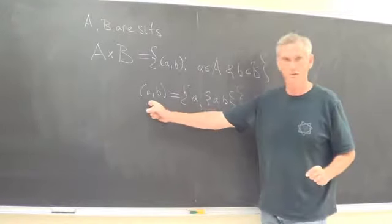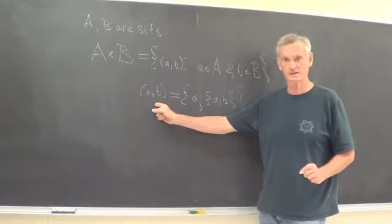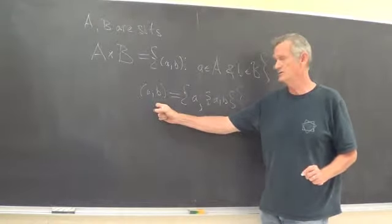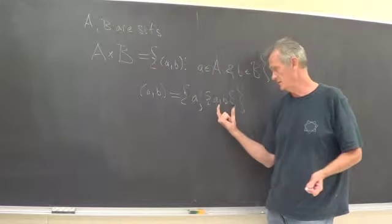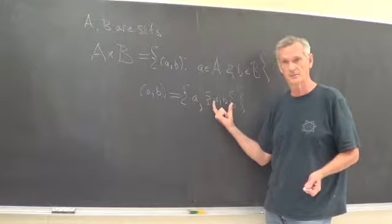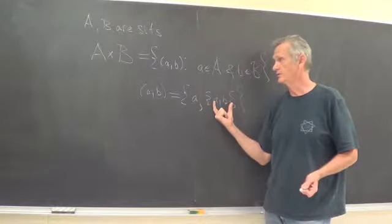So the ordered pair A, B corresponds to a set. The set has two elements. One element is a singleton, and the other element is a pair of elements. So that's what we mean by the ordered pair.